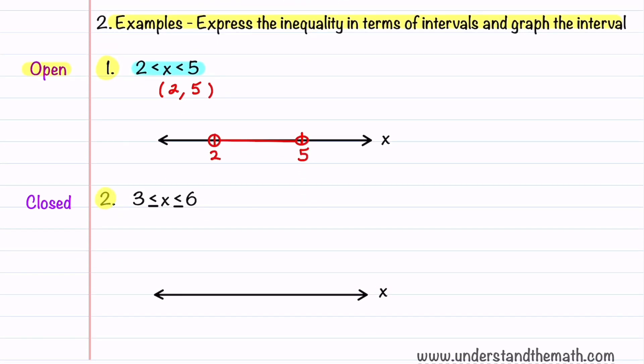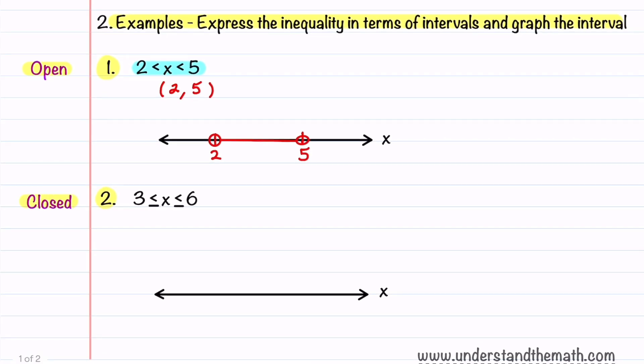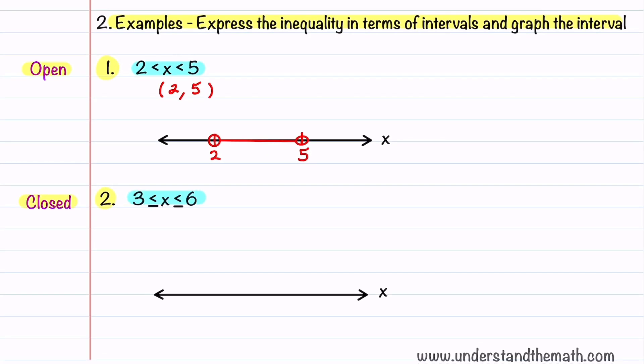Let's now look at our second example. It's an example of a closed interval. Our inequality indicates that x is all numbers between 3 and 6, including 3 and 6. Because we have a less than or equal to sign, we'll use brackets for our interval notation. We'll write it like this: left bracket 3 comma 6, and then we'll put a right bracket.